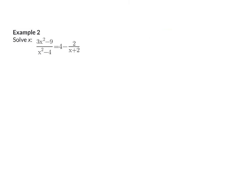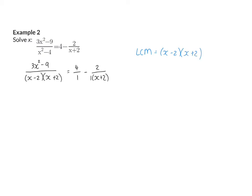Sometimes it is not clear right from the start what the lowest common multiple will be. It helps to factorize all your denominators. In my first term, the denominator factorizes to x minus 2 times x plus 2. On the right, I write 4 as 4 over 1, and my last term's denominator cannot be factorized further. Now I can determine my lowest common multiple, which is x minus 2 multiplied by x plus 2. I need to remember that x cannot be 2 or minus 2, because that would cause the denominator to become zero.